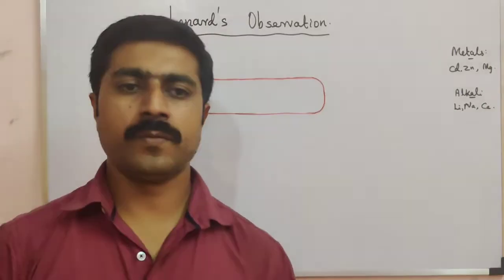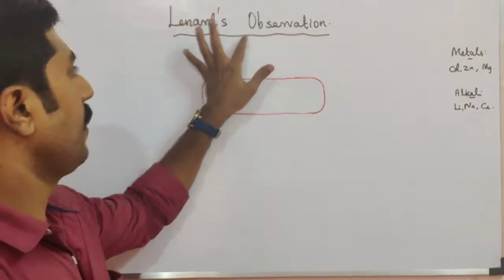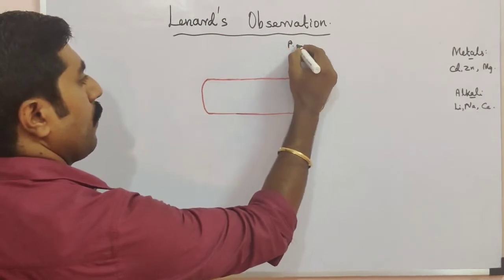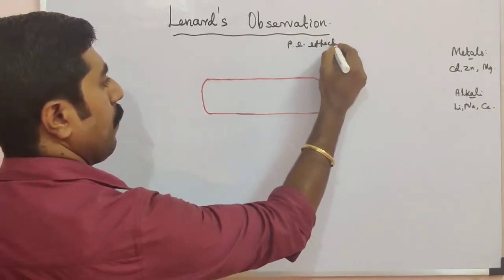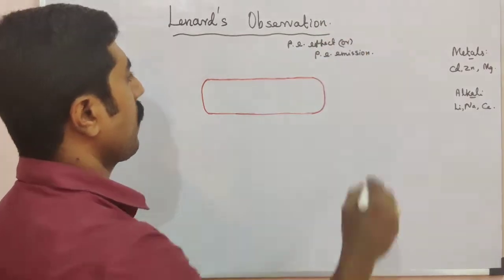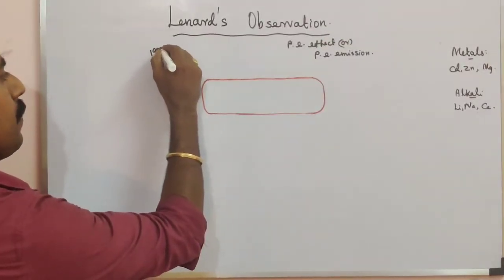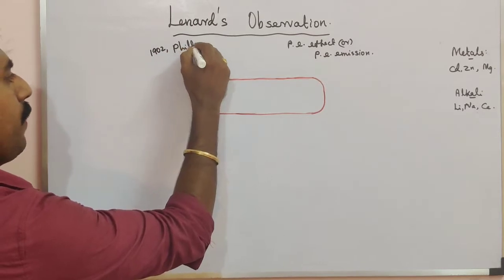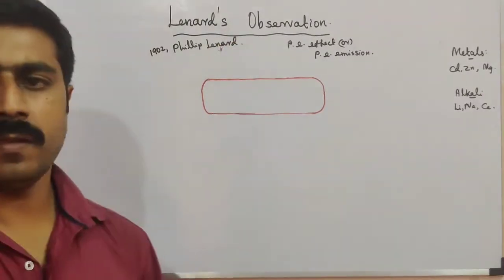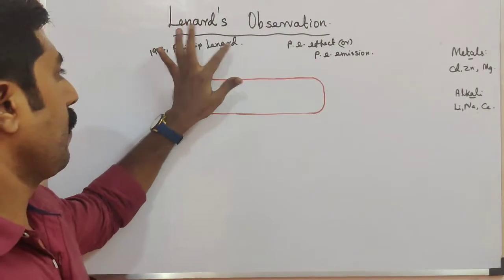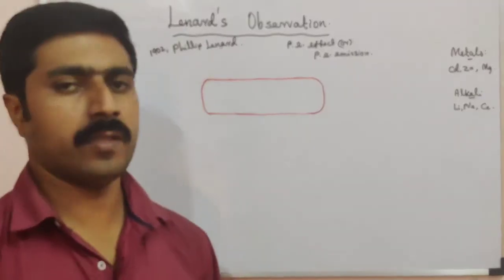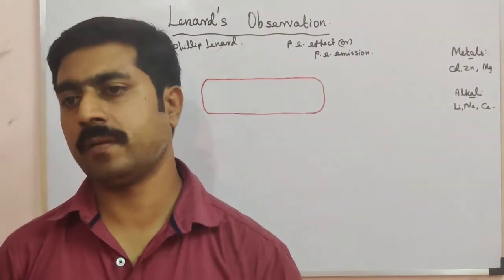Hi students, today we are going to discuss about Leonard's observation about photoelectric emission, or photoelectric effect. So in the year 1902, Mr. Philip Leonard made this observation about photoelectric effect or photoelectric emission. This is a simple experiment.